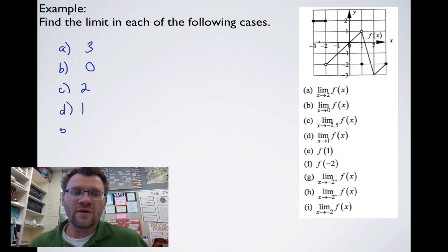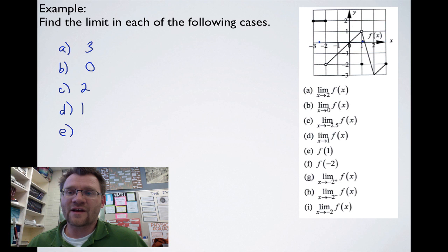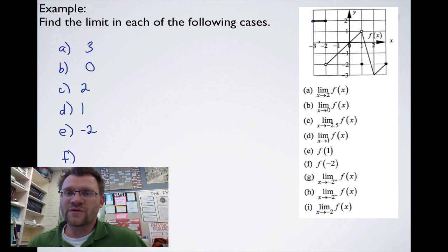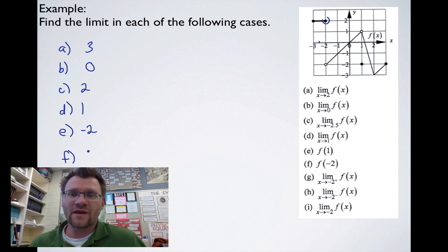For part (e), when they say f(1), they're looking for where the function actually exists. When x equals 1, the function exists at a height of negative 2. For part (f), f(negative 2) is the actual point on the graph right here. That means f(negative 2) equals 2 because that's what the height is at that point.